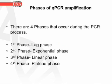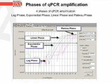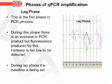There are four phases that occur during the PCR process. The first is the lag phase, the second is the exponential phase, the third is the linear phase, and the fourth is the plateau phase. A diagram from the SDS software for the quantifier program shows all four phases in the amplification plot. During the lag phase — the first phase — there is an increase in PCR product, but the fluorescence produced is too low to be detected, so the baseline is being set.